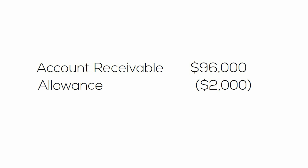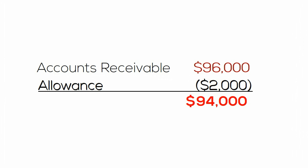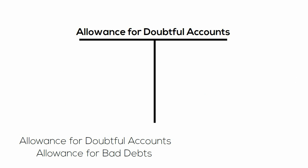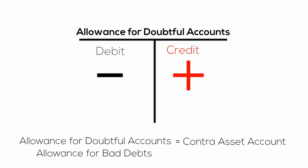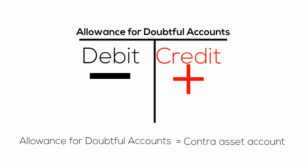The $2,000 allowance is deducted from accounts receivable to arrive at net accounts receivable as follows: Accounts receivable $96,000 less Allowance for Doubtful Accounts $2,000 equals Net Receivables of $94,000. Allowance for Doubtful Accounts, also known as Allowance for Bad Debts, is a contra-asset account. It is also a permanent account because it appears on the balance sheet and carries its remaining balance forward each year. The account is increased by credit entries and decreased by debit entries.